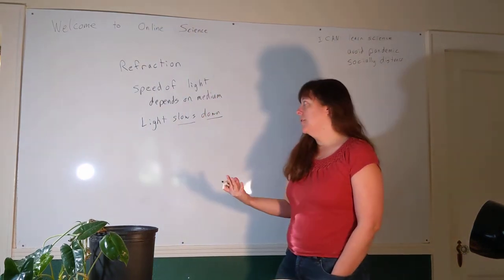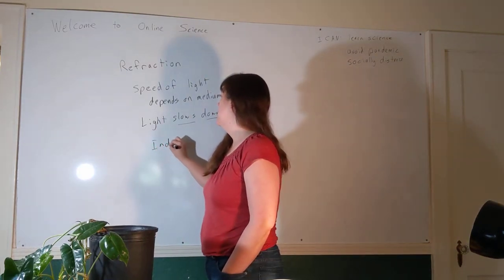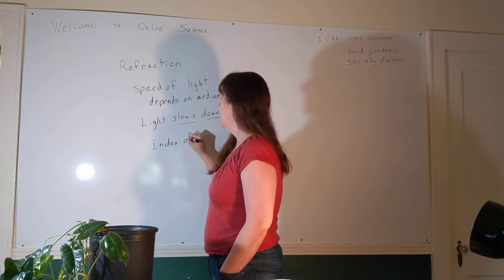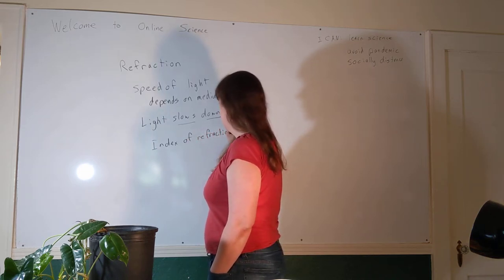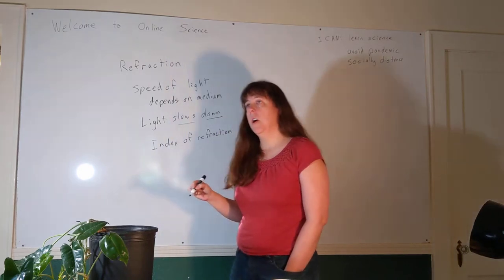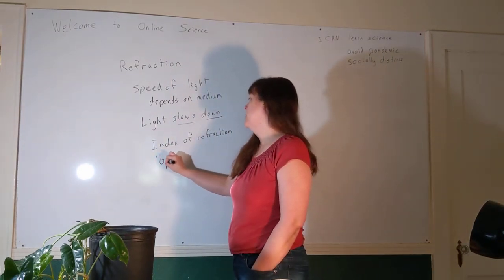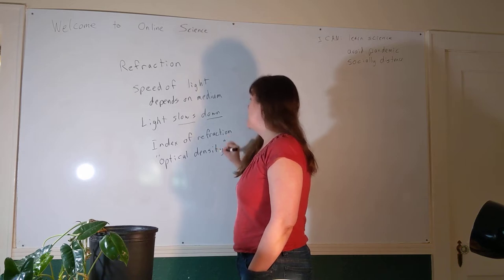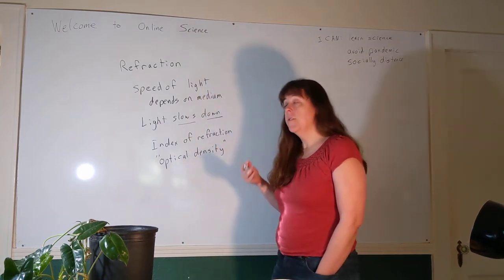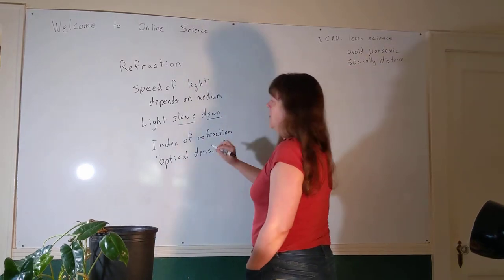And the amount that the light slows down is given by the index of refraction. The index of refraction is sometimes also called the optical density of a substance.